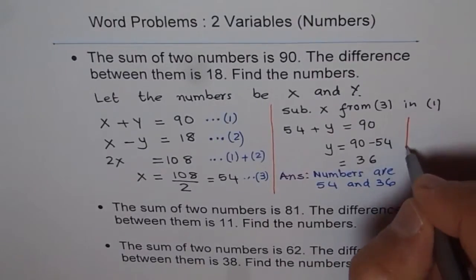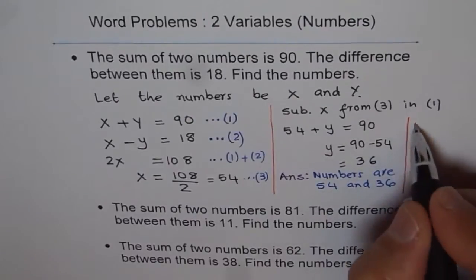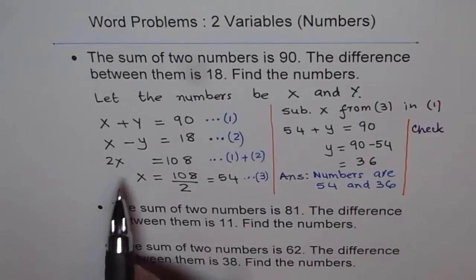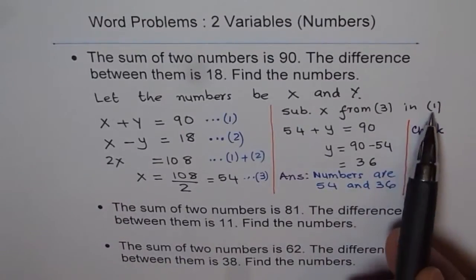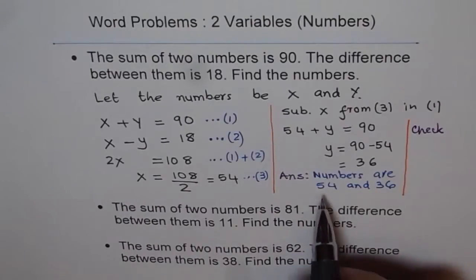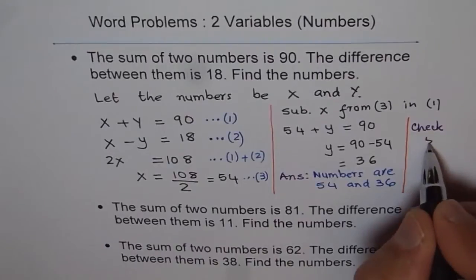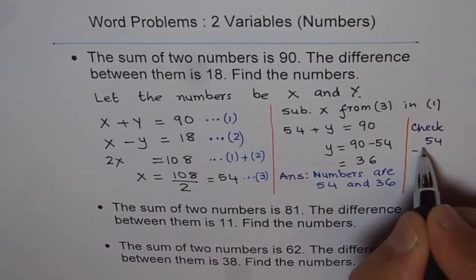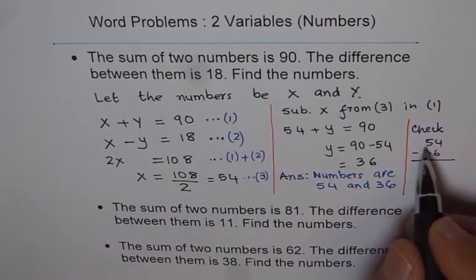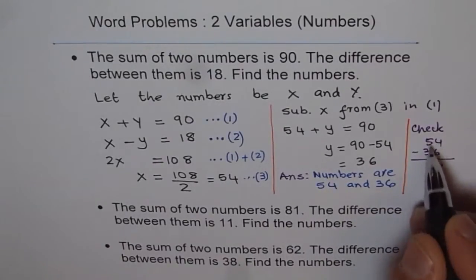We will check the answer on the side. We used equation 1 to find the answer, so to check, use equation 2. X is 54, Y is 36. Let's check: 54 minus 36. 14 minus 6 is 8, and 4 take away 6... we borrow, so we compute 54 minus 36.